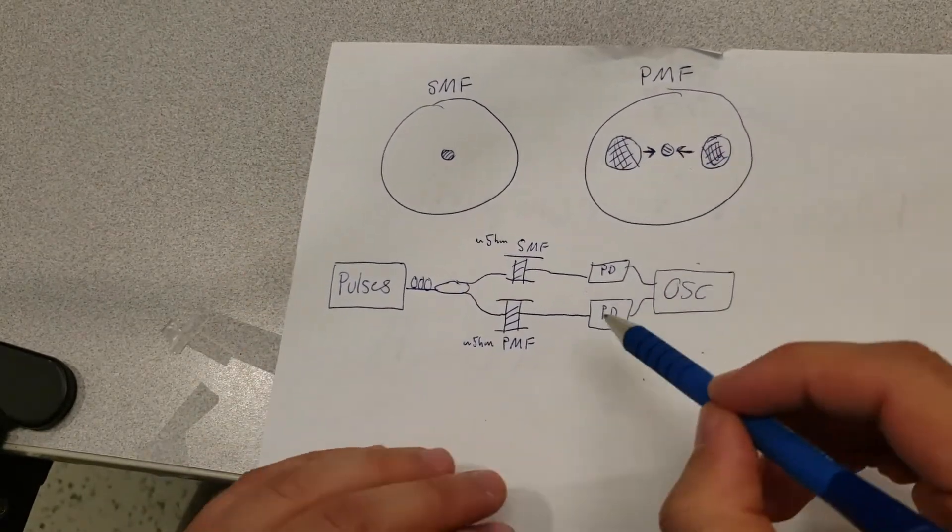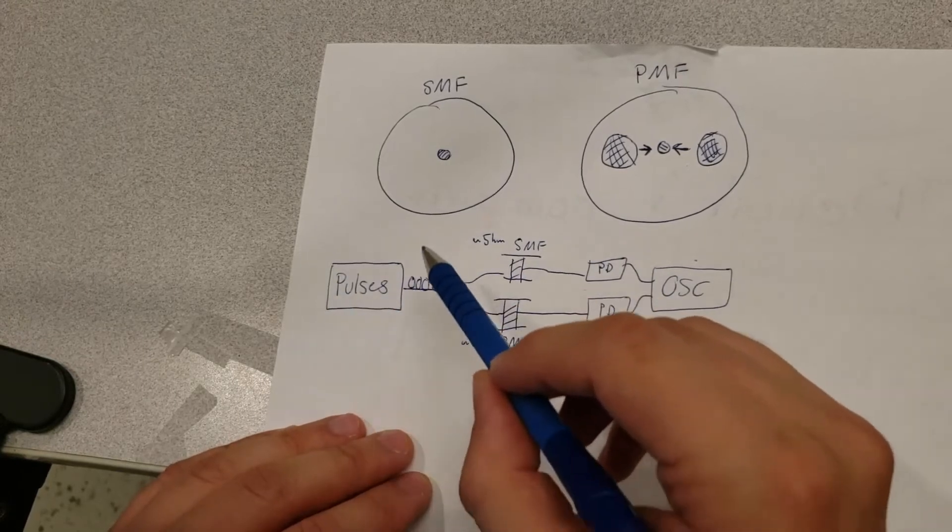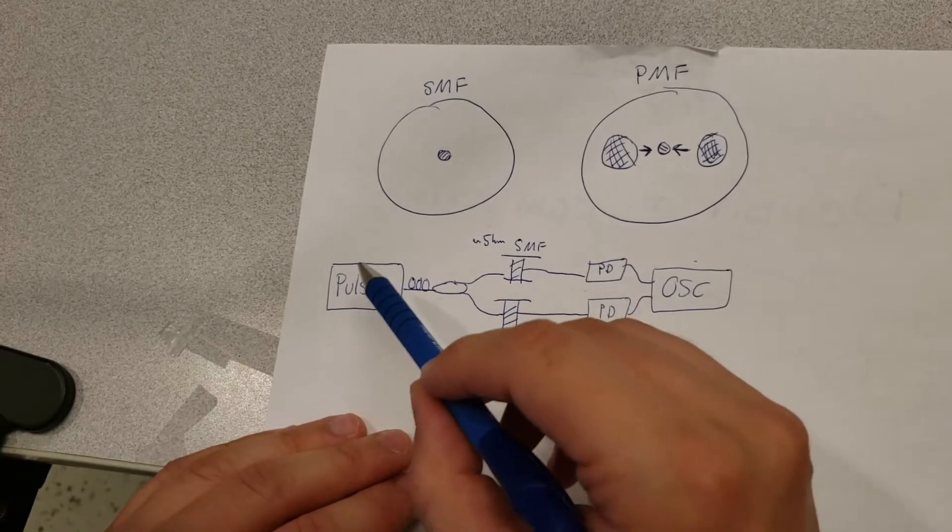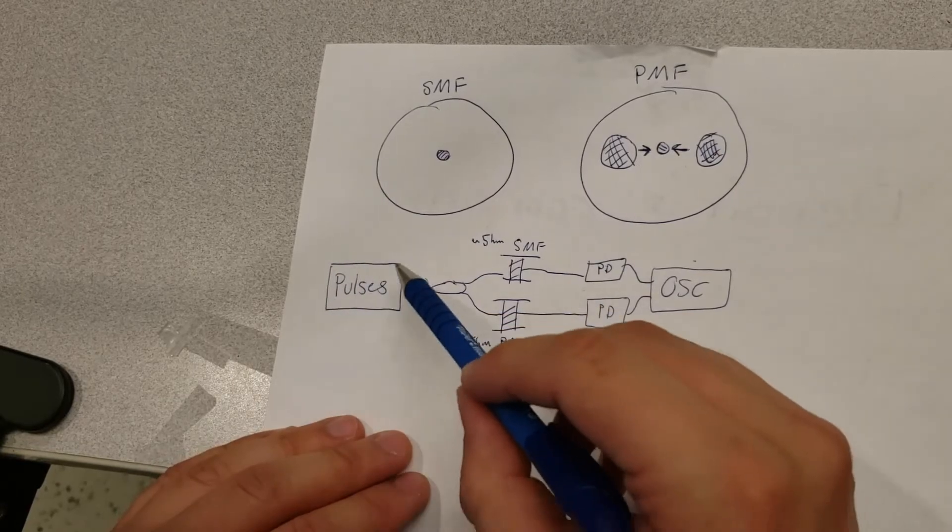So that's what we'll see today. I've built this little setup here, reusing the setup for generating pulses that we used for the experiment with the electro-optic modulator and for phasal TDR.